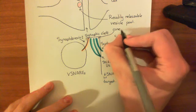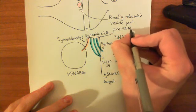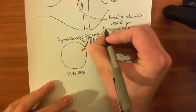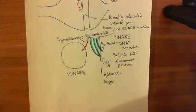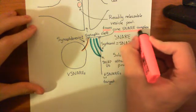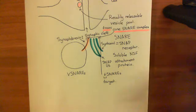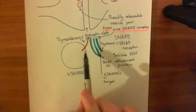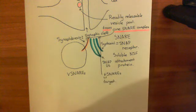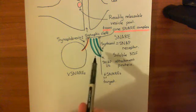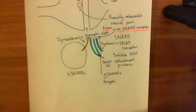Together these form what's known as a core SNARE complex — and specifically a trans-core SNARE complex. The reason it's called a trans-core SNARE complex is because 'trans' means across or on the other side. This refers to the fact that you have SNARE proteins coming together in this core complex which are on opposing membranes: synaptobrevin-2 is on a different membrane to syntaxin-1 and SNAP25. That is why it is known as a trans-core SNARE complex.